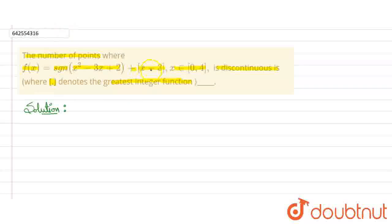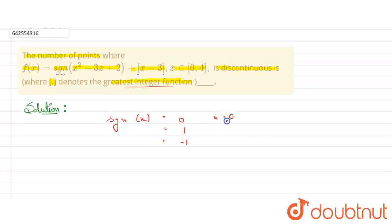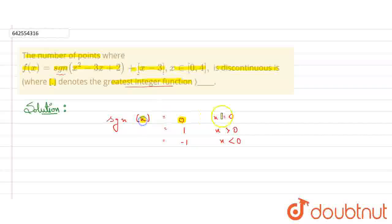f(x) is a collection of these two sub-functions: the signum part and the greatest integer function part. Signum x has three values: it will be 0 at x = 0, it will be 1 when x > 0, and it will be -1 when x < 0. The signum function will be discontinuous at point 0. So this sub-function will be discontinuous when x² - 3x + 2 equals 0.